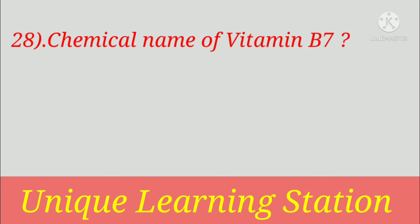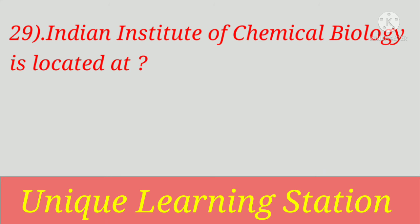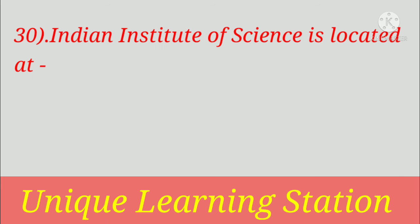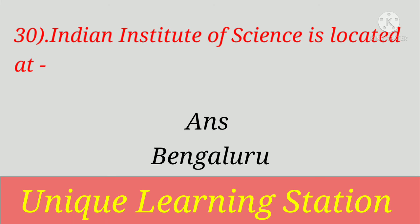Chemical name of vitamin B7 is? Answer: biotin. Indian Institute of Chemical Biology is located at? Answer: Kolkata. Indian Institute of Science is located at? Answer: Bengaluru.